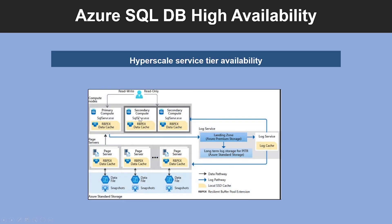Now let's look into the Hyperscale service tier availability. The availability model in Hyperscale includes four layers: a stateless compute layer, a stateless storage layer, a stateful transaction log storage layer, and a stateful data storage layer.